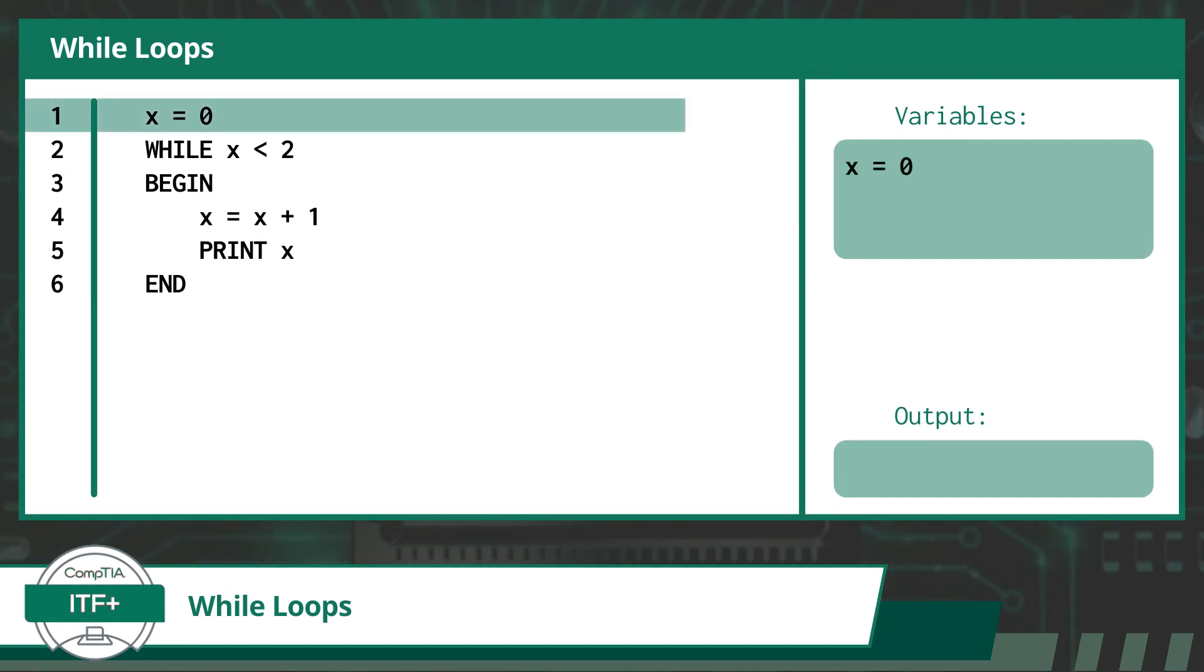First up, we will declare a variable with the identifier x and initialize it with the value of 0. On line 2, we see a condition statement for a while loop. Our condition statement calls for our program to check if x is less than 2. Since the value of the variable x, which is currently 0, is less than 2, we will execute the code statements within the loop. The word begin on line 3 is only used here to mark the beginning of the looped code statements. So let's continue on.